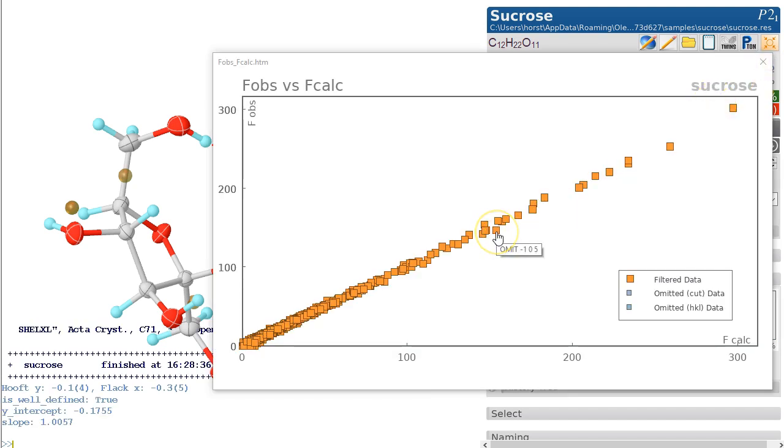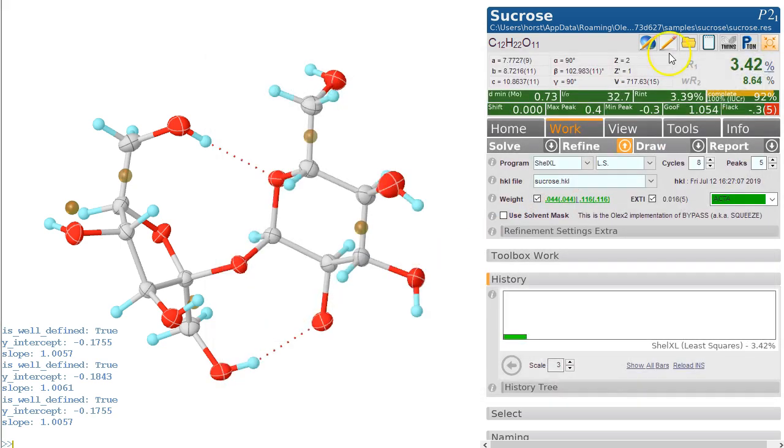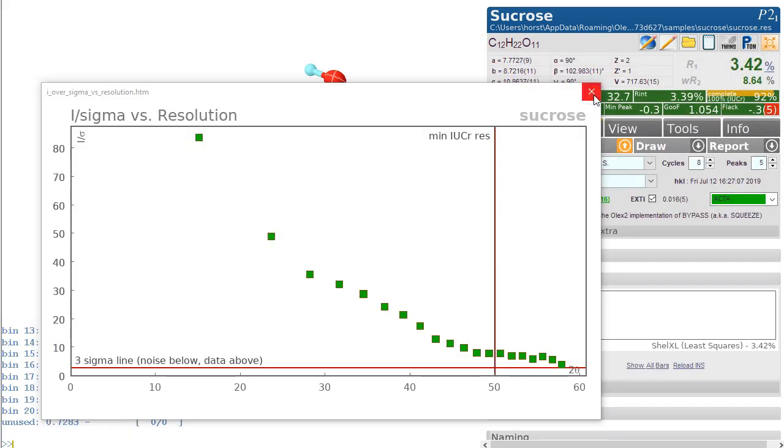You can omit a specific reflection by clicking on this on-off, whether you use it in the refinement or not. It's also worth having a quick check at the I versus sigma plot.